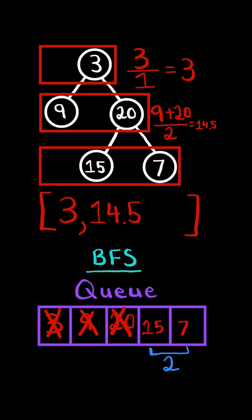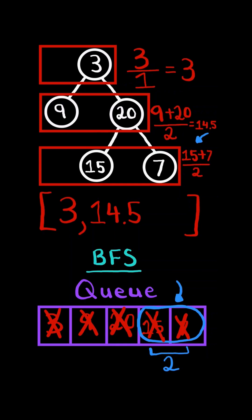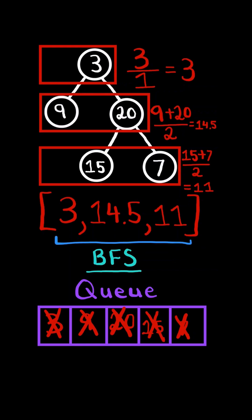Now we have two elements in our queue, so we will iterate two times. We pop from the queue and add node 15's value to the sum. Node 15 does not have any children, so we don't append to the queue. We pop again and add node 7's value to the sum. Node 7 does not have any children either. Now we have finished iterating two times, so we divide the sum by the number of iterations to get the average in the level, and we append the average to the resulting list. We stop the algorithm when the queue is empty and return the resulting list.